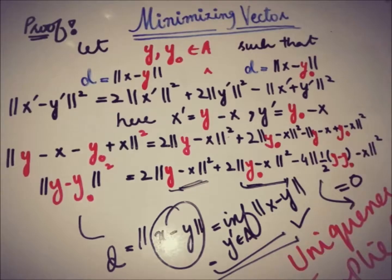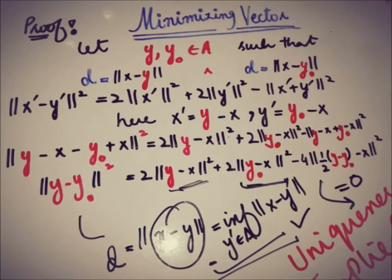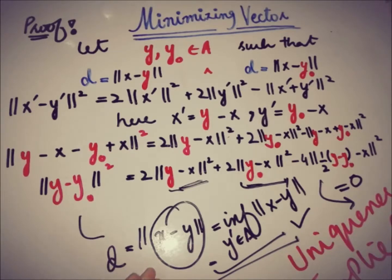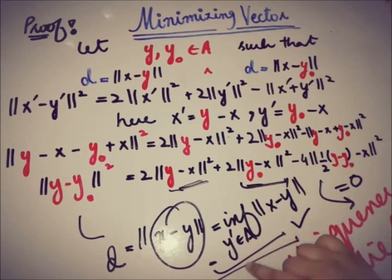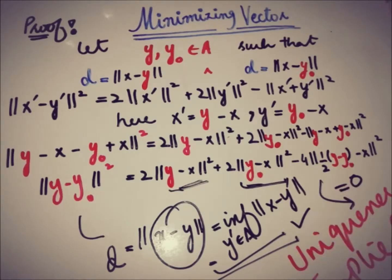We have proved the Minimizing Vector Theorem: if A is a non-empty complete convex subset of inner product space V and X is in V but not in A, then there is a unique Y in A such that ||X - Y|| equals the infimum over all Y' in A of ||X - Y'||. That is all for now — subscribe to the channel for more upcoming videos. Take care, goodbye.